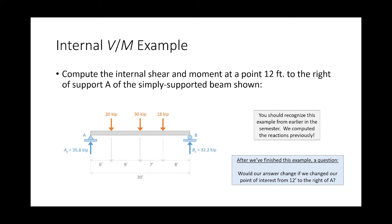Let's do a spot check on the reactions: 35.8 plus 32.2 is 68 — 20, 30, 50, 68 down — so it makes sense from the verticals. What I want to do is compute the internal shear and moment at a particular point — not everywhere, just at 12 feet to the right of A. We're going to cut a section, call it section 1-1, and compute our internal shears and moments.